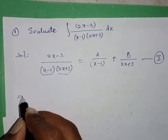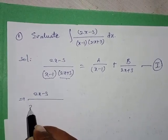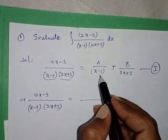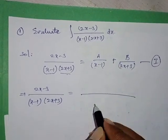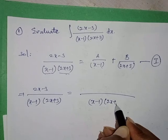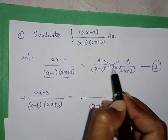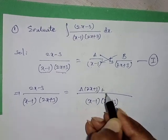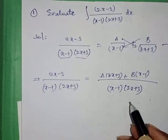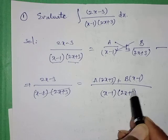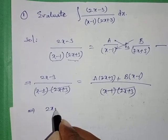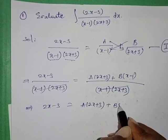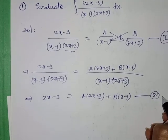Taking the LCM as (x minus 1)(2x plus 3) and doing cross multiplication, we get A(2x plus 3) plus B(x minus 1). Since the denominators on both sides are equal, they cancel. The remaining equation is: 2x minus 3 equals A(2x plus 3) plus B(x minus 1). Consider this as equation number 2.